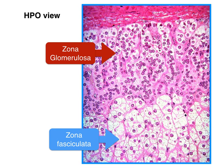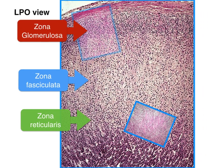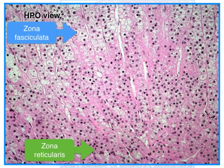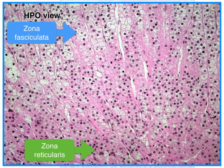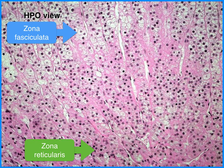The zona glomerulosa is the thin outer layer of the adrenal cortex. Its cells are pale staining and organized into ovoid clusters. The cells of the zona glomerulosa produce mineralocorticoid hormones like aldosterone. Just below this sub-layer is the zona fasciculata, which comprises the thick middle layer of the cortex. Its cells are very pale because of the presence of lipid droplets, and organized into parallel cords. The cells of this region produce glucocorticoids like cortisol. The deepest sub-layer of the cortex is the zona reticularis, the innermost layer of the adrenal cortex. Cells in the zona reticularis stain deeply, and this region produces androgens.